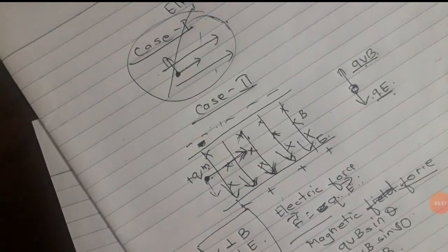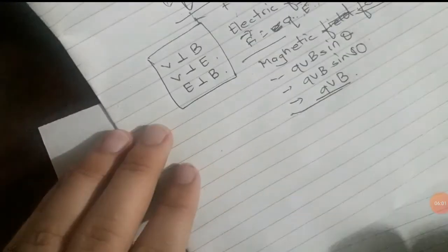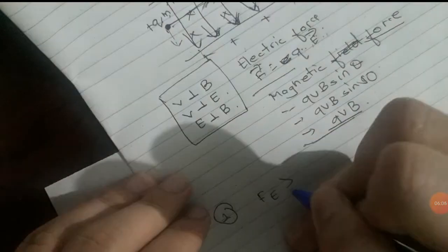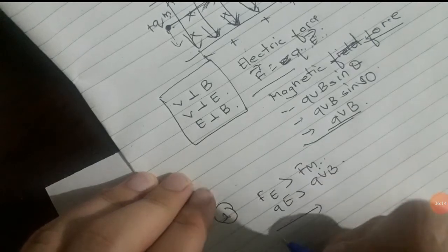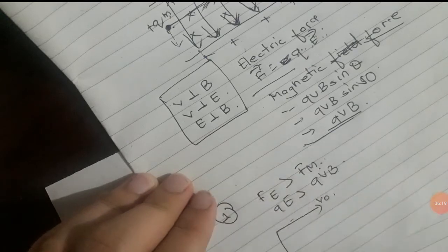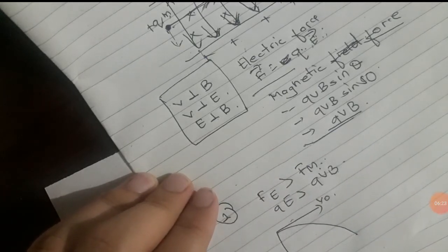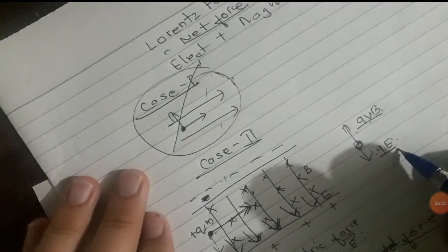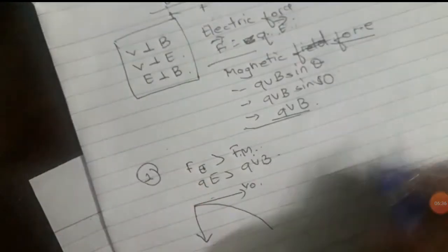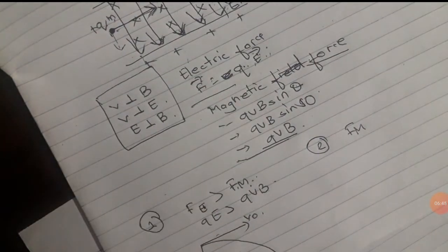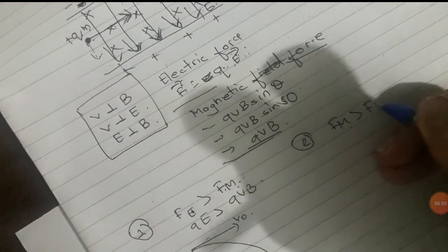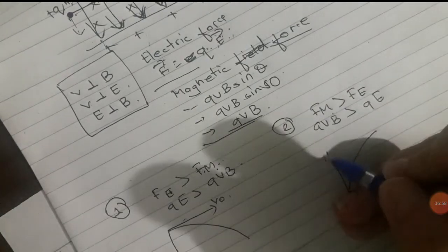Now, three things can happen. If the electric force QE is bigger than the magnetic force QVB, this results in a downward parabola. If the magnetic force QVB is bigger than the electric force QE, then we have an upward parabola.